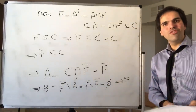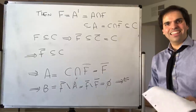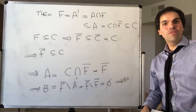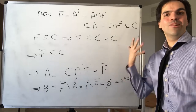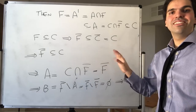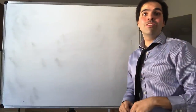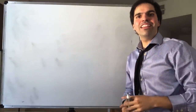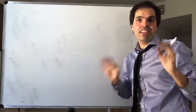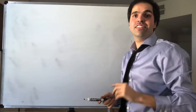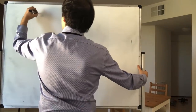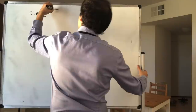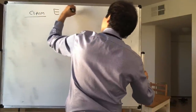So that's the proof of connectedness. Now let's prove that E is not path connected, which is more analytical but, in my opinion, way more interesting. Claim: E is not path connected.